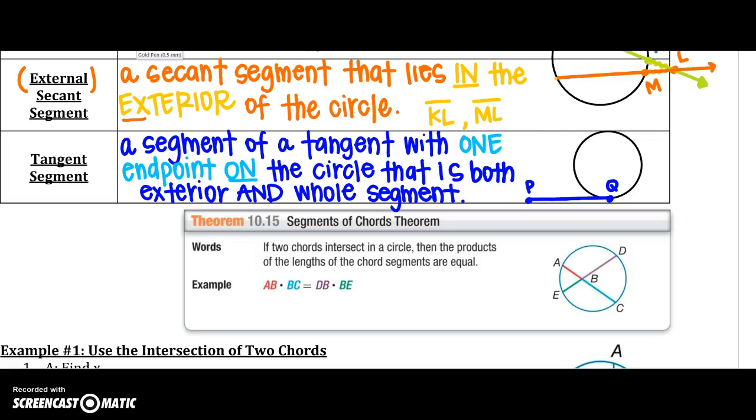So, section 10.15, I'm going to have two chords. If two chords intersect in a circle, then the product of the lengths of the chord segments are equal. So let's look at what they have put there. So, AB times BC,